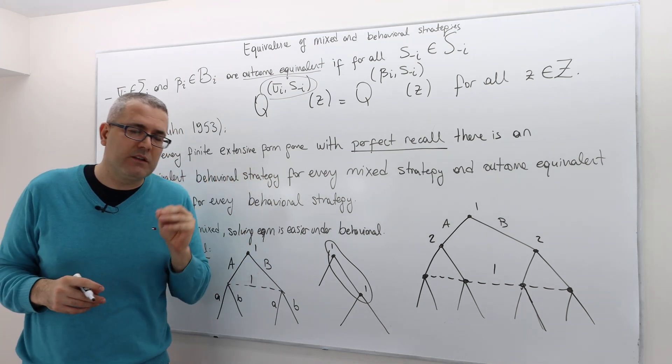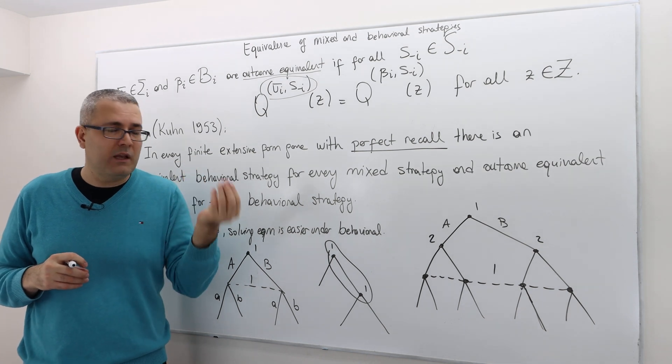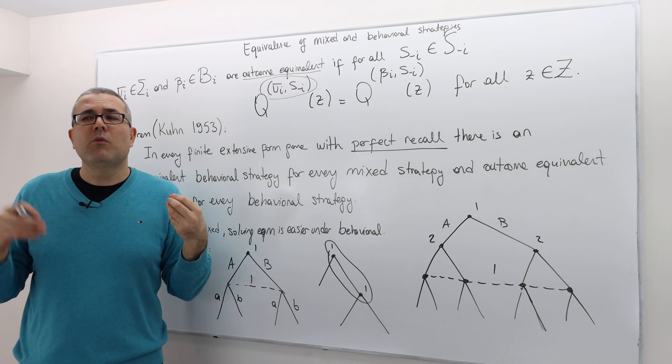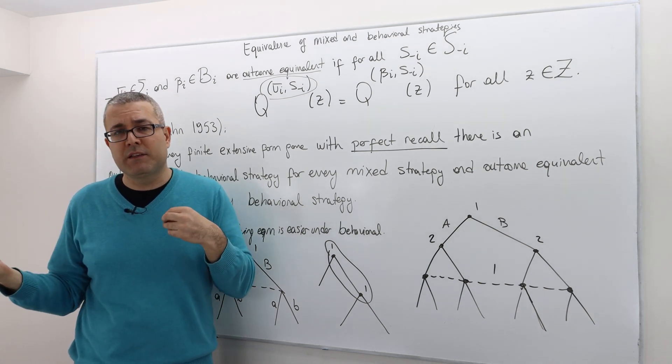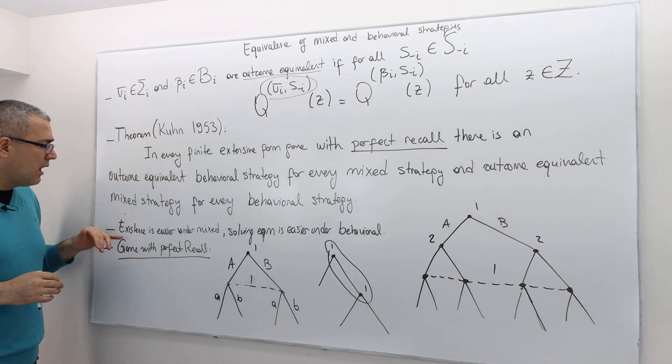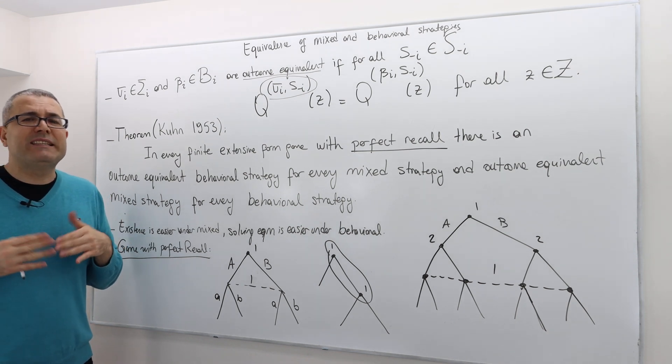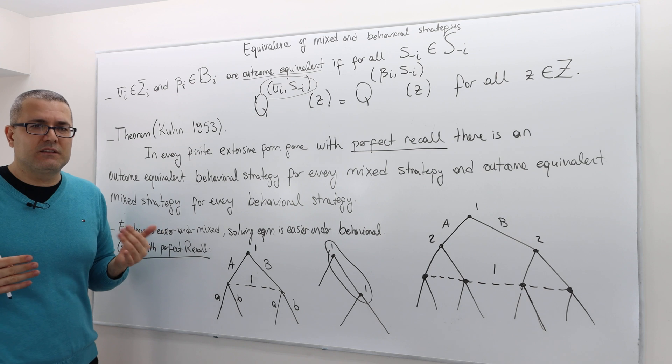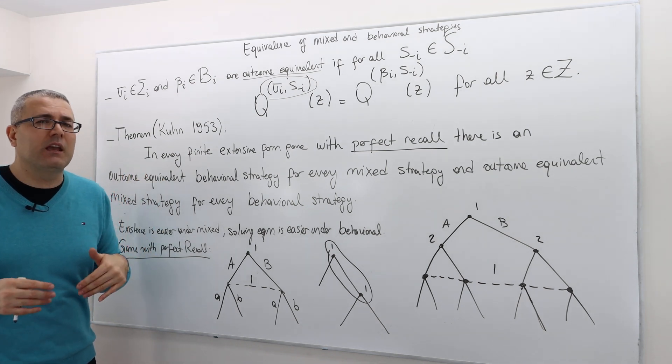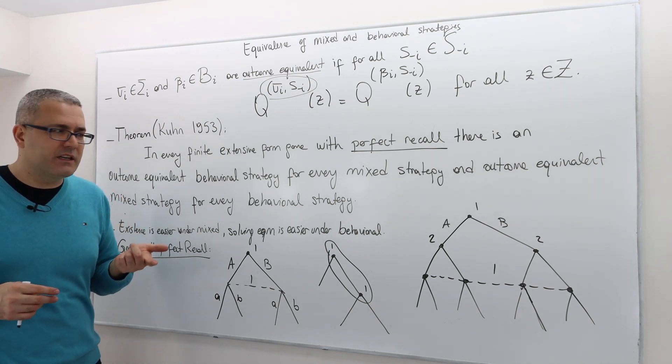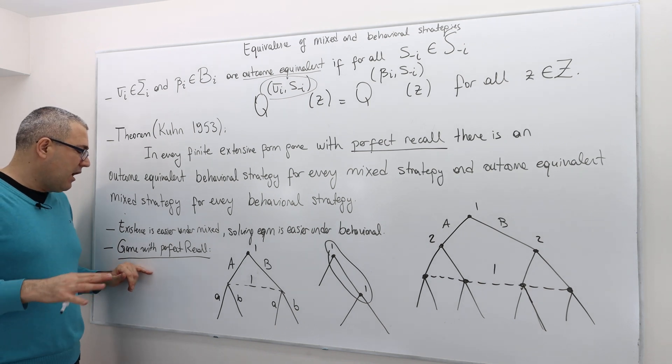Very good. So whether you use behavioral strategy or pure strategy, it doesn't matter. If you find a Nash equilibrium or SPNE, subgame-perfect equilibrium, under mixed, that means there's always a corresponding outcome-equivalent version in mixed or vice versa. We usually use the mixed strategies to prove some sort of an existence theorem or existence result. It makes our life easier. However, when we solve the equilibrium of a game, then behavioral strategies are actually handier.